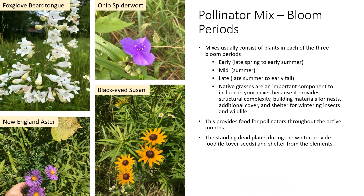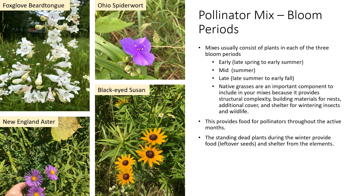When thinking about the components of a pollinator mix, it's important to consider different bloom periods. Pollinator mixes usually consist of plants in each of three bloom periods: early, which is late spring to early summer — like foxglove beardtongue and Ohio spiderwort; mid, which is summer — like black-eyed susan; and late, which is late summer to early fall — like New England aster and goldenrods. Including native grasses is also important because it provides structural complexity, building materials for nests, and additional cover and shelter for wintering insects and wildlife.